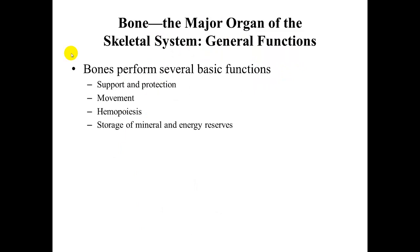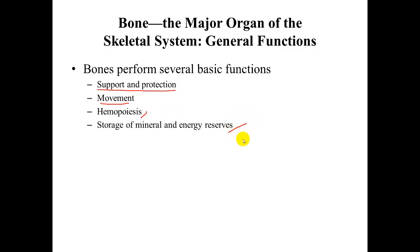Now that we understand some of the basic components, let's look at the general functions of bones. Most will describe support and protection as the number one function, as well as movement. However, bones also perform hemopoiesis — the formation of blood cells — and the storage of mineral and energy reserves.